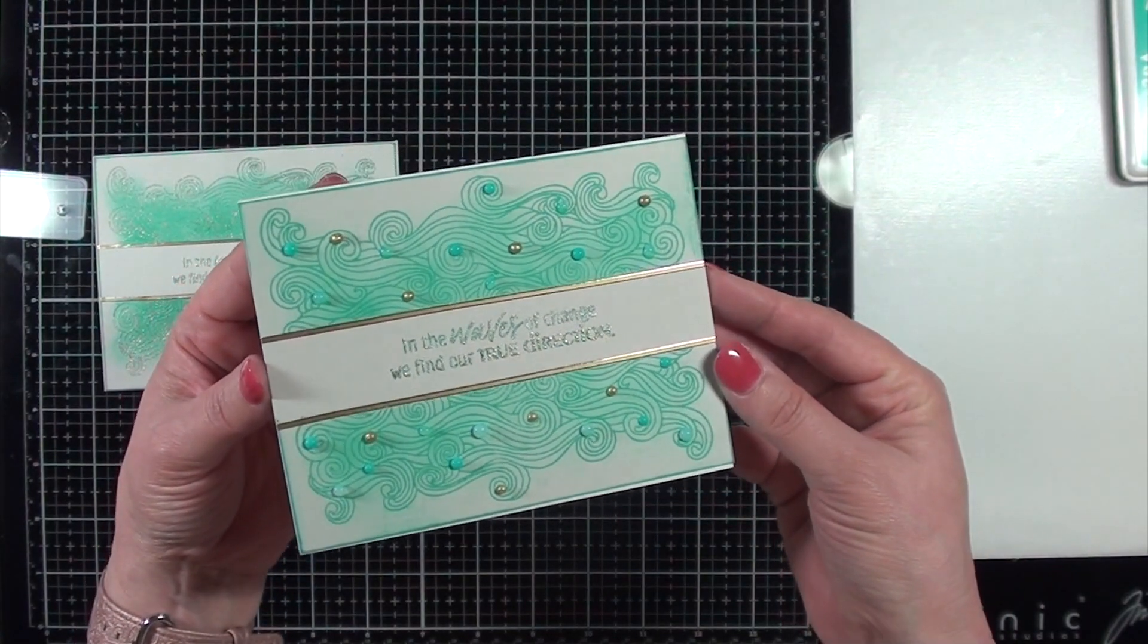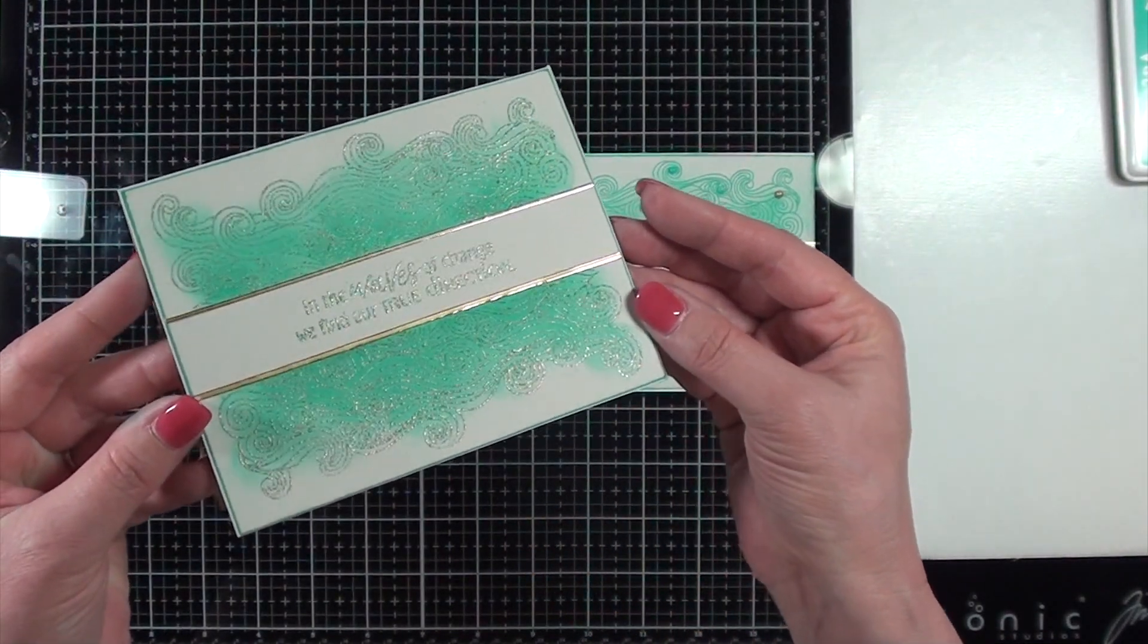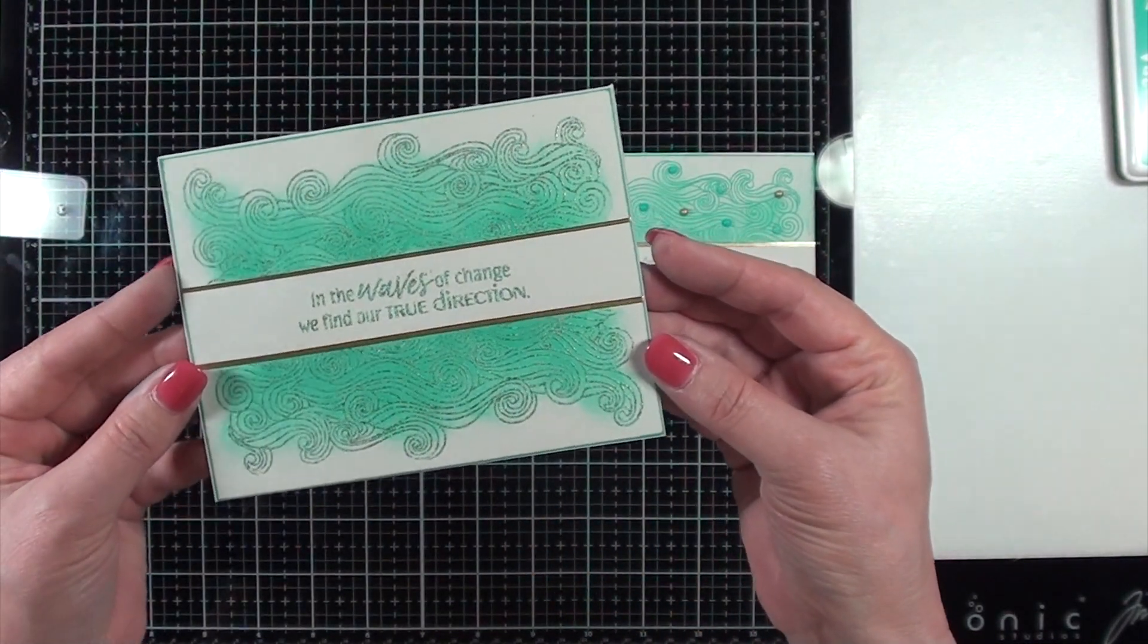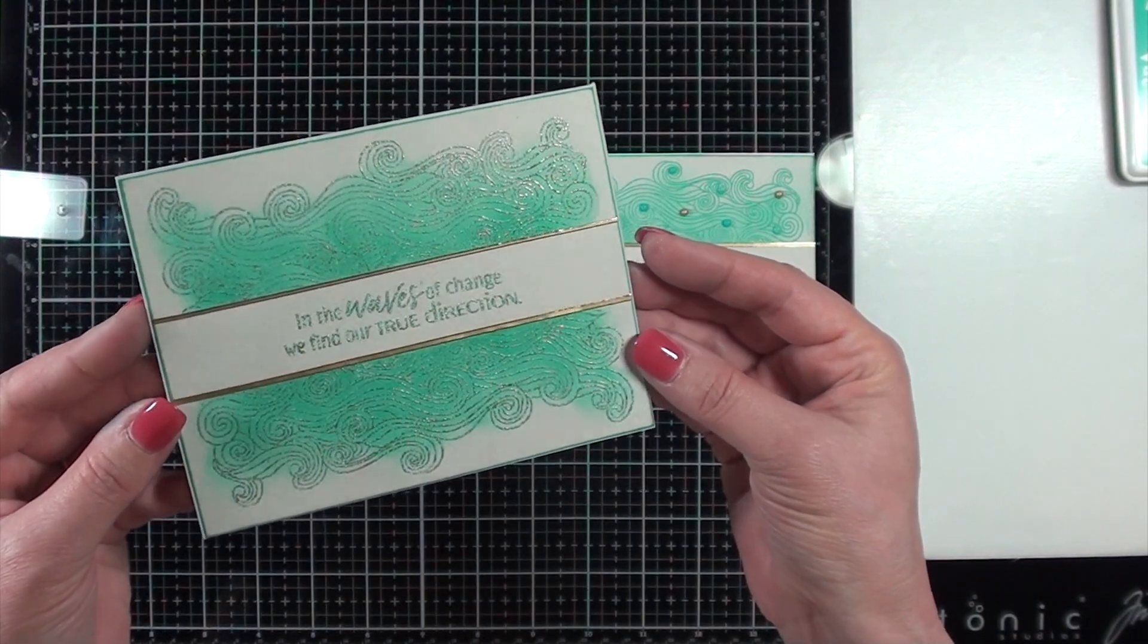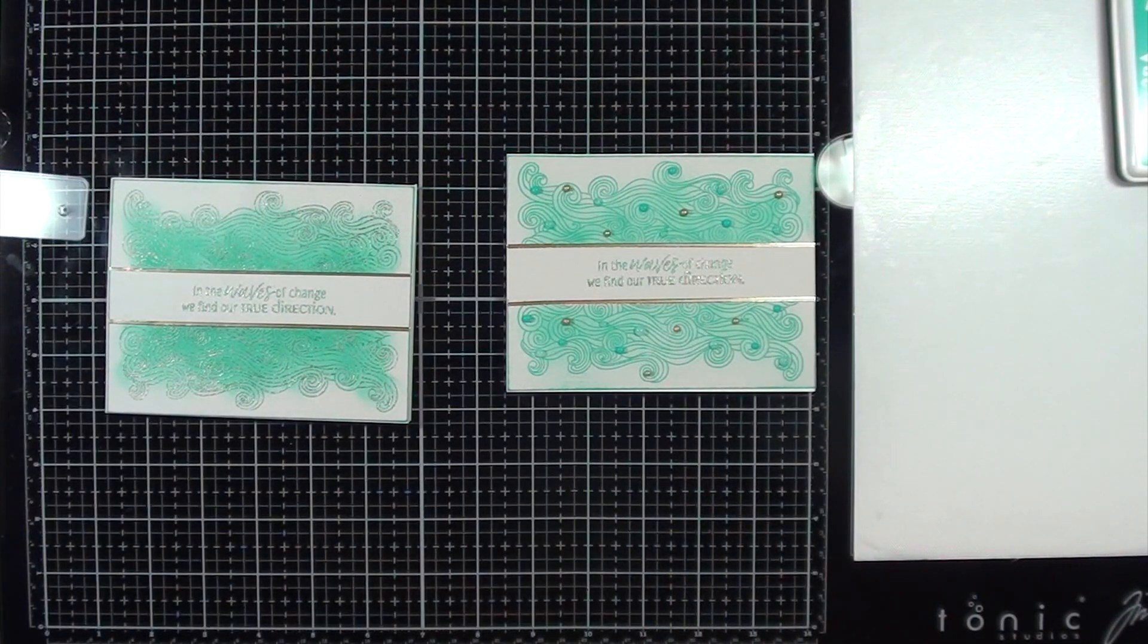And on one, the one that was stamped with the ink, I put a bunch of Nuvo drops to embellish it. And then on the other one where I'm using the Wow embossing powder all over, I didn't add any additional embellishment.